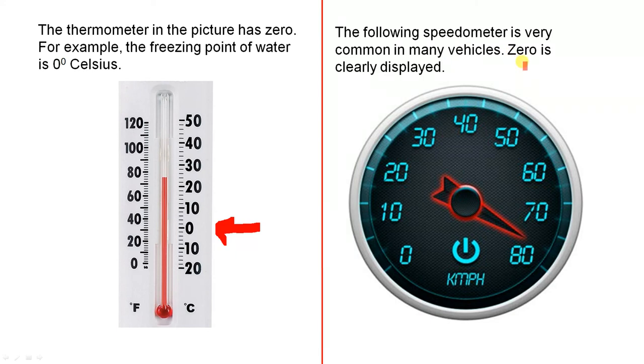The following speedometer is very common in many vehicles. 0 is clearly displayed. So there's 0 there. So 0 has many applications in real life and we've just seen a few of them.